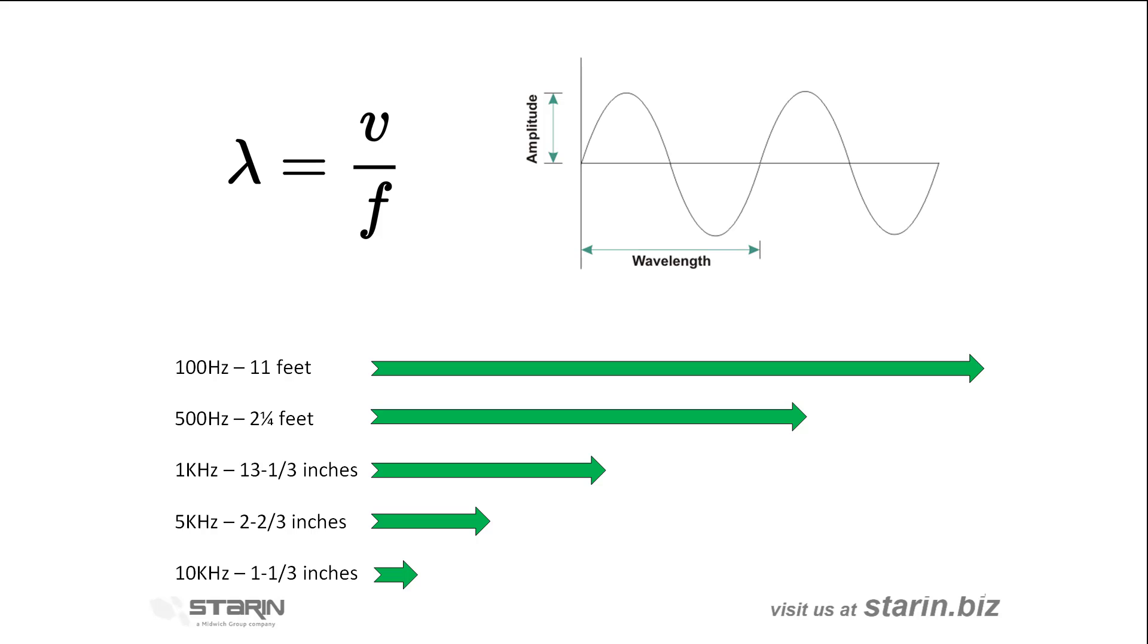At 1 kHz, the wavelength is about 13⅓ inches. At 5 kHz, the wavelength is 2⅔ inches. And at 10 kHz, the wavelength is only 1⅓ inches.